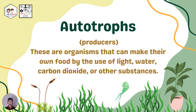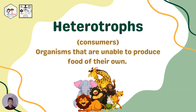Next, autotrophs. These are also called producers — organisms that can make their own food by the use of light, water, carbon dioxide, and other substances. Because they can make their own nourishment, they can produce their own food. Examples include plants, algae, planktons, and certain bacteria.